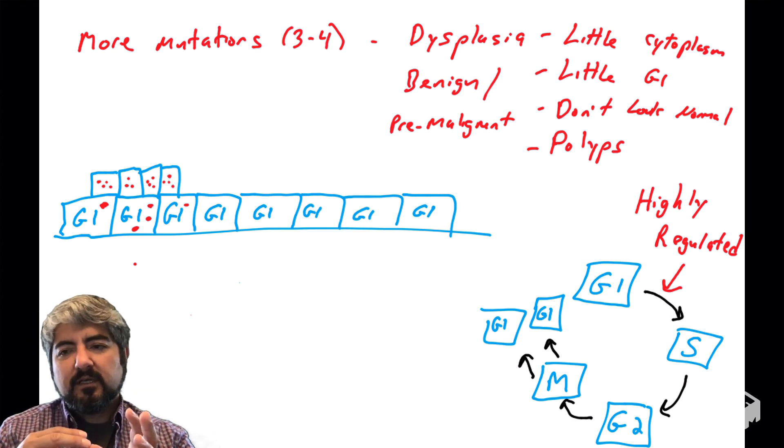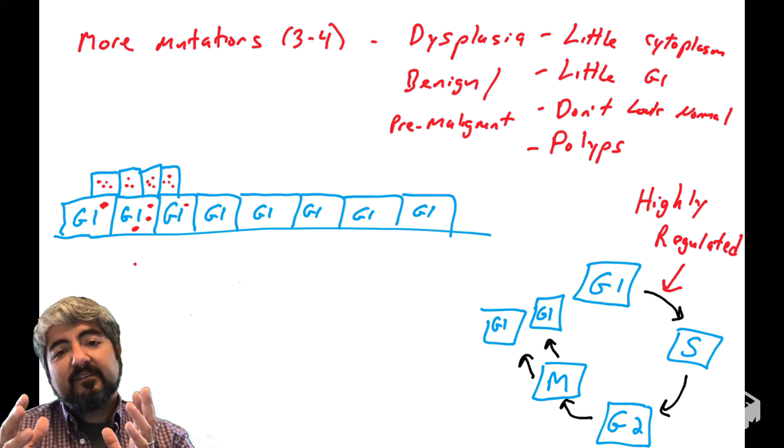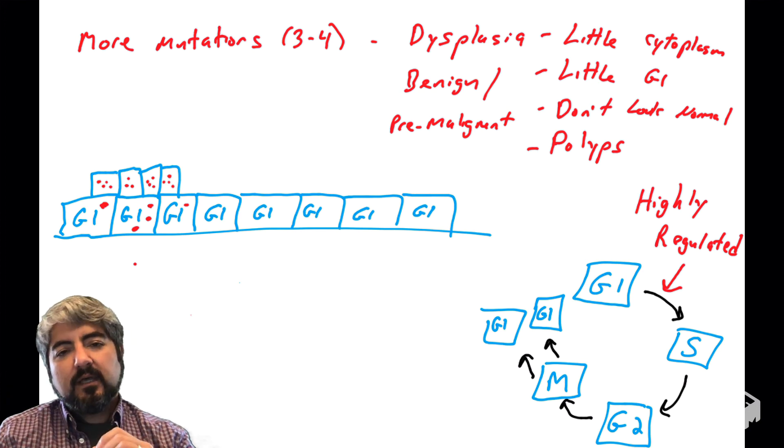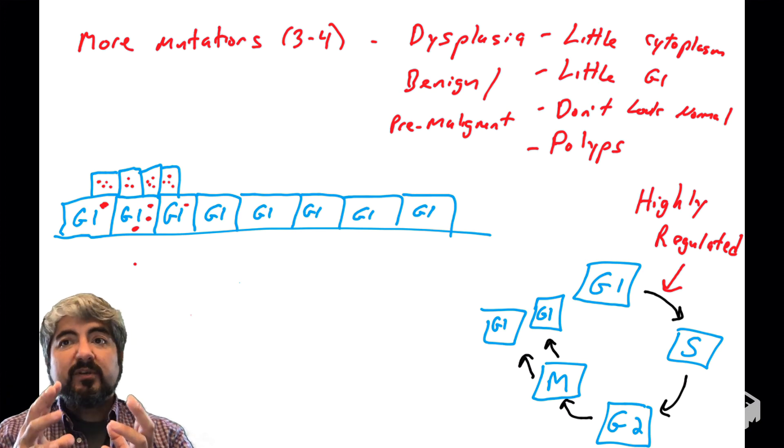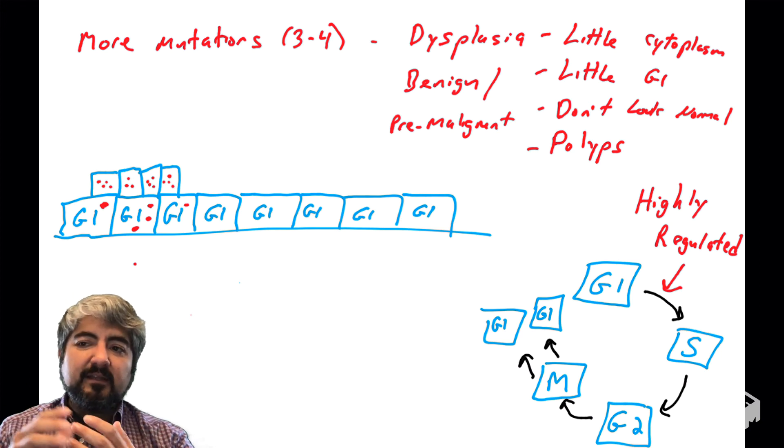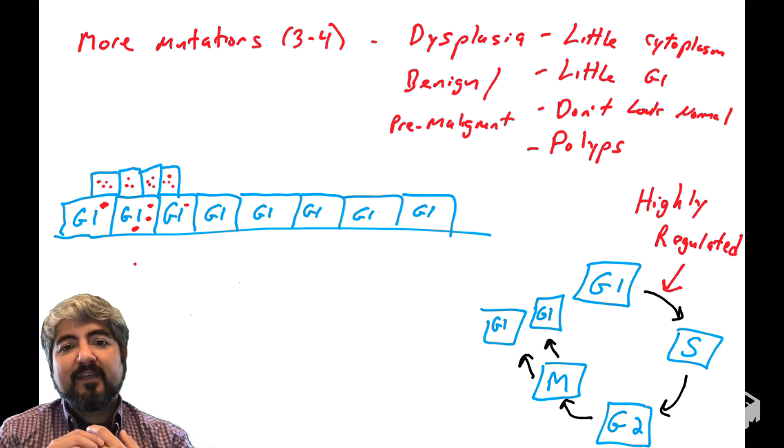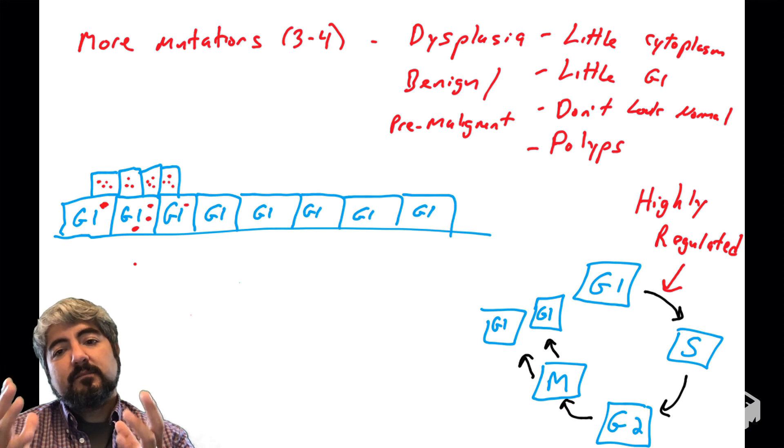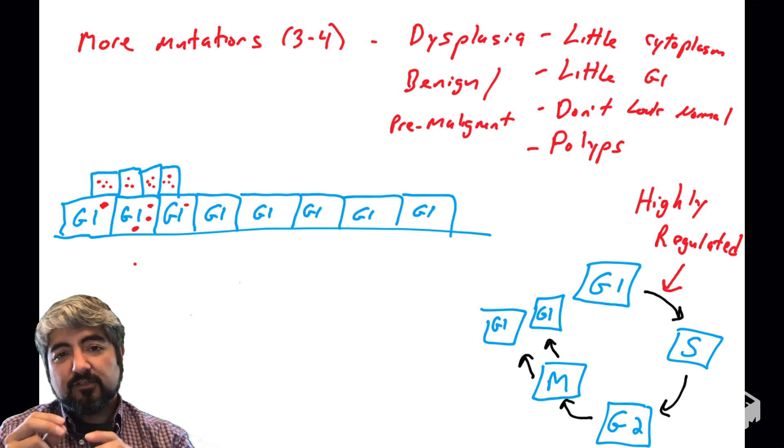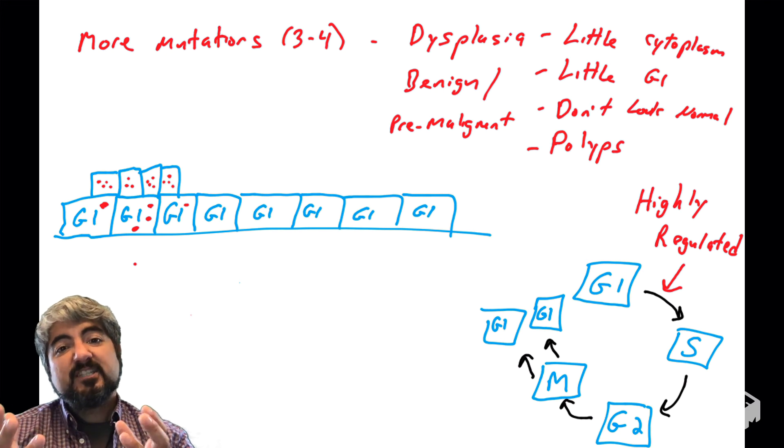They don't really stay through G1 phase very often. And they just keep going through the cell cycle. So they're forming a pre-malignant tumor. So they're still benign, but they're only a few more mutations away from cancer. So there might be things like polyps or little growths. It would be dysplasia, but again, not cancer yet.